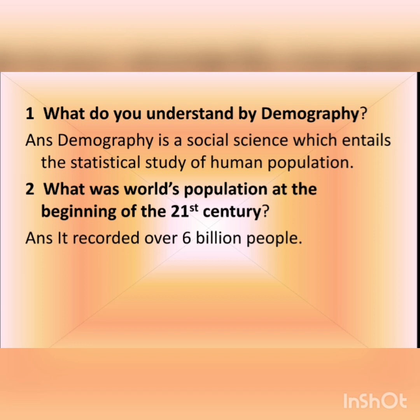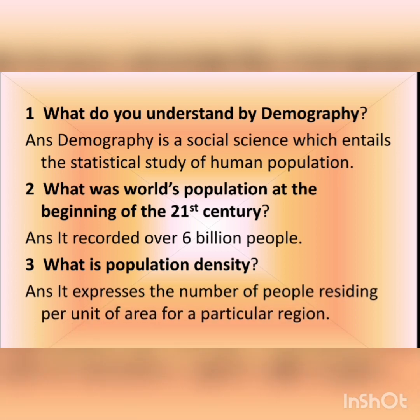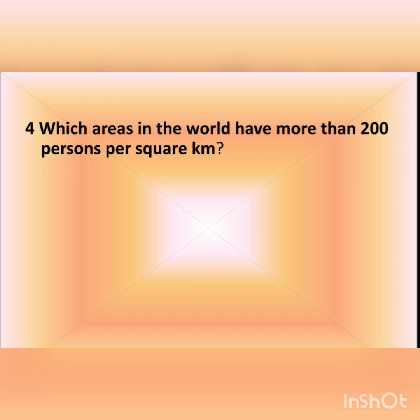The third question is: what is population density? The answer is it expresses the number of people residing per unit of area for a particular region. It is the ratio between the number of people to the size of the land.